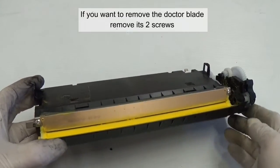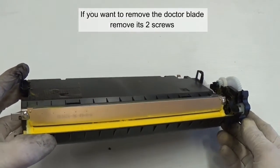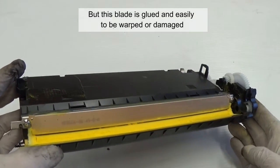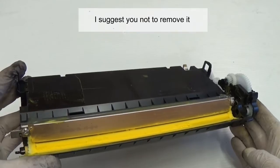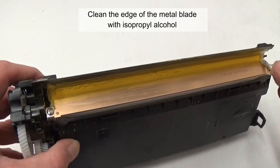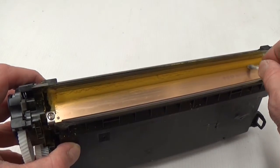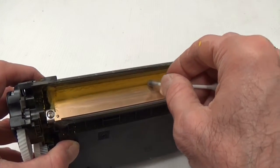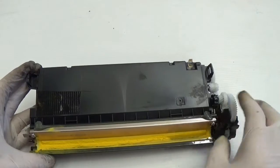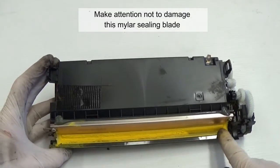If you want to remove the doctor blade, remove its two screws, but this blade is glued and easily damaged. I suggest you not remove it. Clean the edge of the metal blade with isopropyl alcohol. Be careful not to damage the sealing blade.